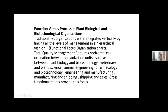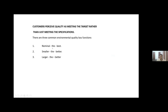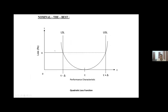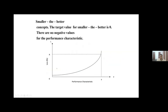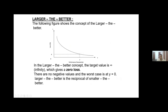The goal is to understand the various environmental health problems in context to cross-functional management in plant biological and biotechnological organizations. The nominal-the-best characteristic is used here. The curve for smaller-the-better has a target value of zero, with no negative values for performance characteristics. For larger-the-better, the minimum loss is zero. Performance characteristics and loss in terms of rupees are also minimum here.